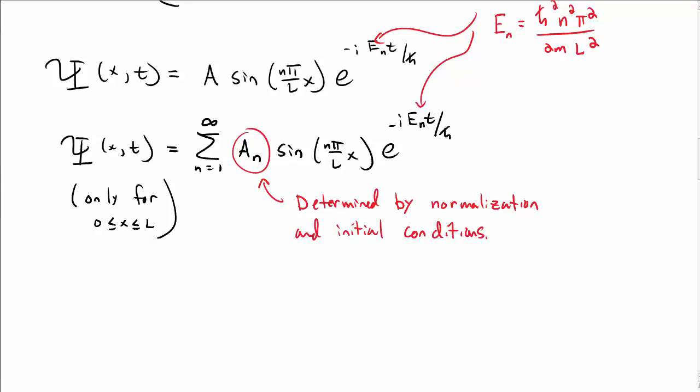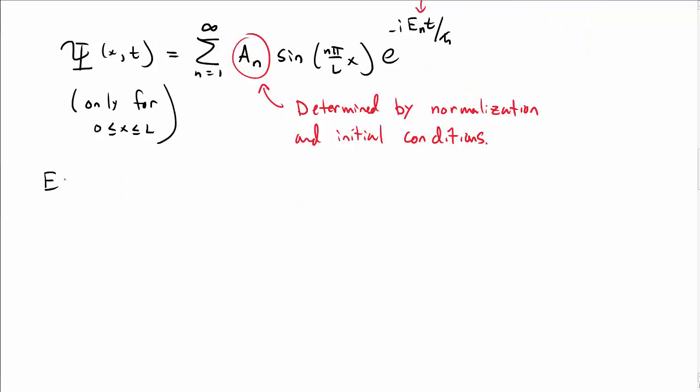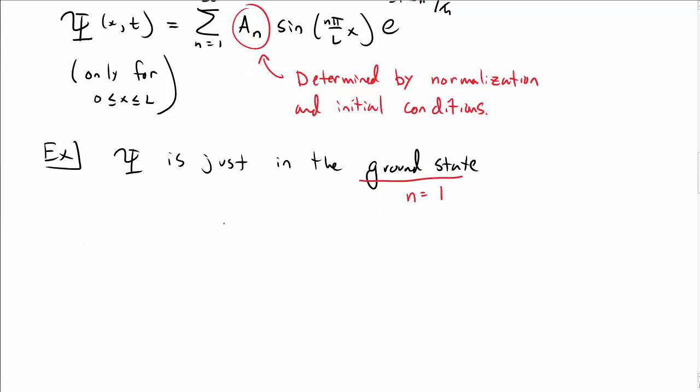Let's look at one example of how that might work. Let's say capital Ψ is just in the ground state initially. By ground state, we mean n = 1. So that means Ψ(x,t) is A_1 sin(πx/L) e to the minus i E_1 t over h-bar.